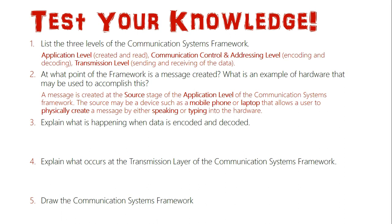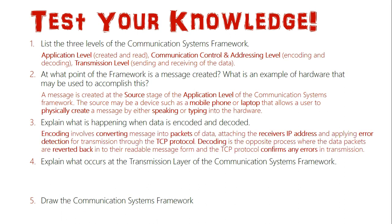Question three: explain what is happening when data is encoded and decoded. Encoding involves converting a message into packets of data, then attaching the receiver's IP address so it knows where to go, and then applying error detection for the transmission through the TCP protocol — the Transmission Control Protocol — which lets the sender know that the data was received correctly.